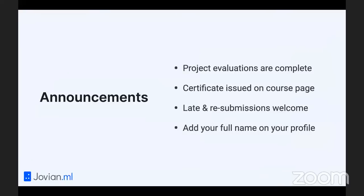Now I have a few important announcements. The project evaluations are complete. If you have submitted your course project, you can now go to the course page zerotopandas.com and check the project page. On the project page, you should be able to see a pass or fail grade. If you have received a pass grade in all the assignments and the project, you will find that a certificate is issued on the course page and you will see a view certificate button.